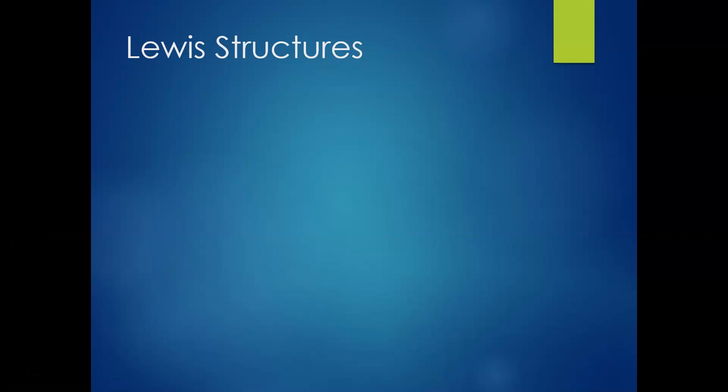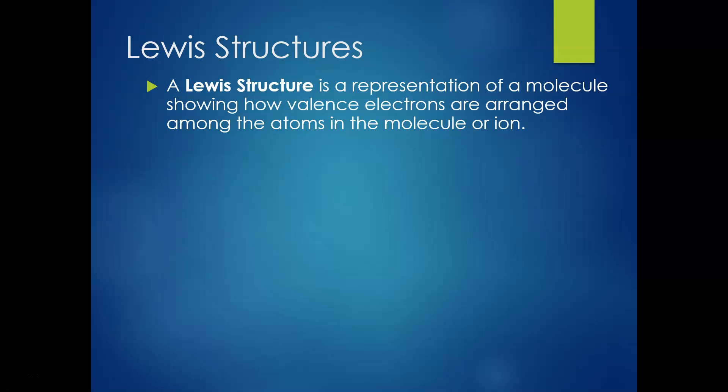Now that you're a covalent formula and naming master, let's talk about what these compounds actually look like. We demonstrate that by using something called Lewis structures. A Lewis structure is a representation of a molecule showing how valence electrons are arranged among the atoms in a molecule or ion. That's a fancy way of telling us that it's a pictorial representation of what these look like.